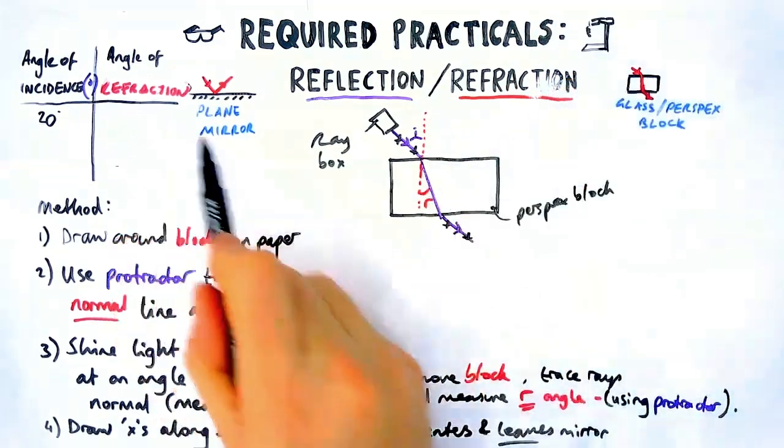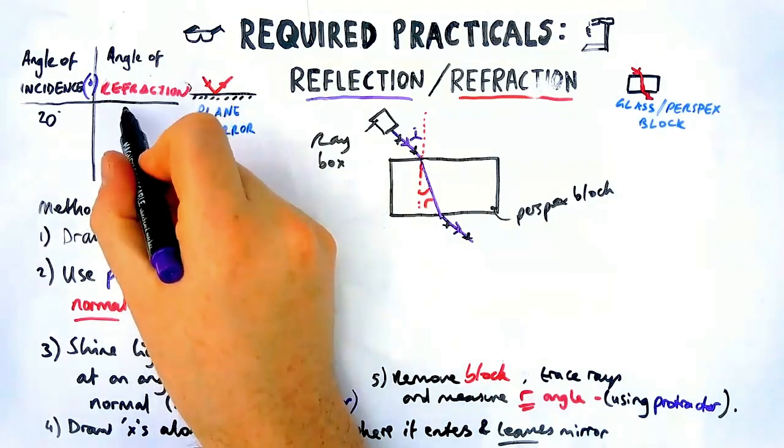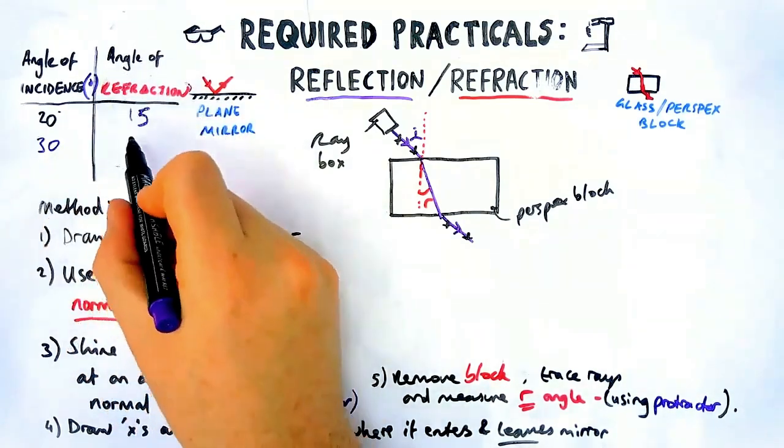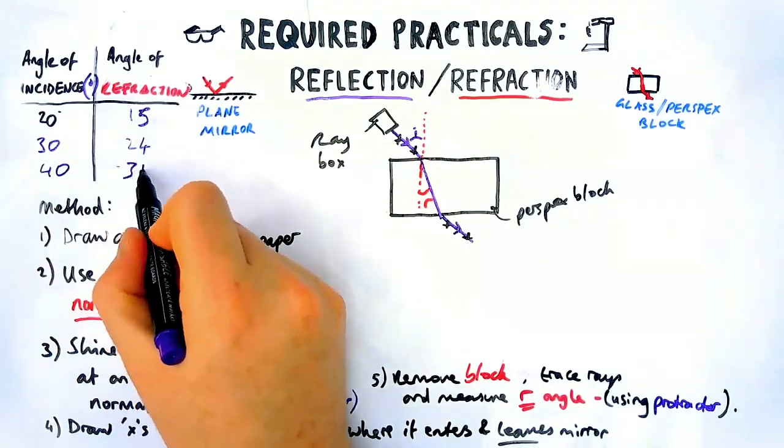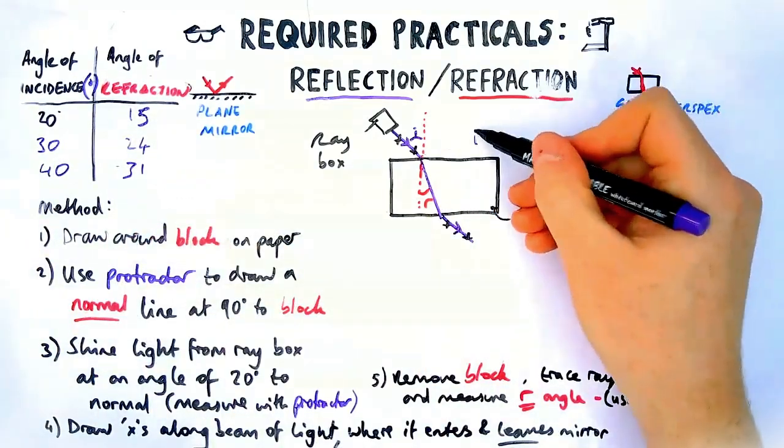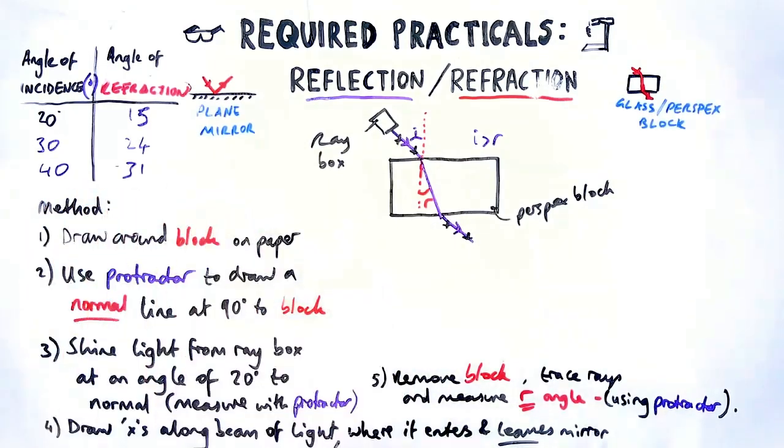Now I've missed out one word mirror with stage 4, but you see how very similar those methods are. Either of them could come up. But essentially you're replacing mirror with block and you're replacing reflection with refraction. Now for this practical, the angle of incidence is always going to be bigger than the angle of refraction, rather than being the same. You can go see those two angles there. I is always bigger than R.